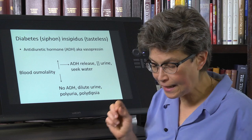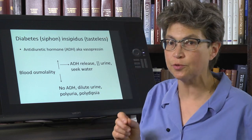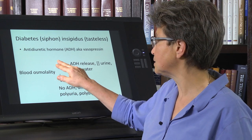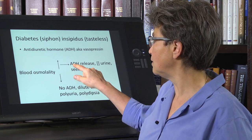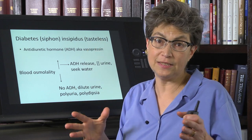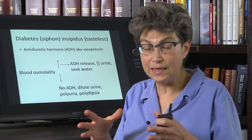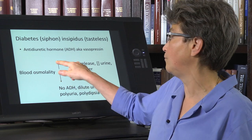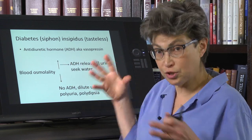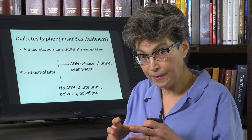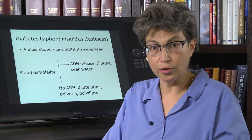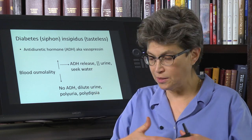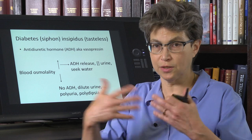Under normal circumstances, when blood osmolality increases, ADH is released, and that signals that we now need to concentrate the urine. This is a sign of dehydration. So we're going to concentrate the urine and seek water. This is a typical hypothalamic response — an integrated behavioral response that's going to address the problem.